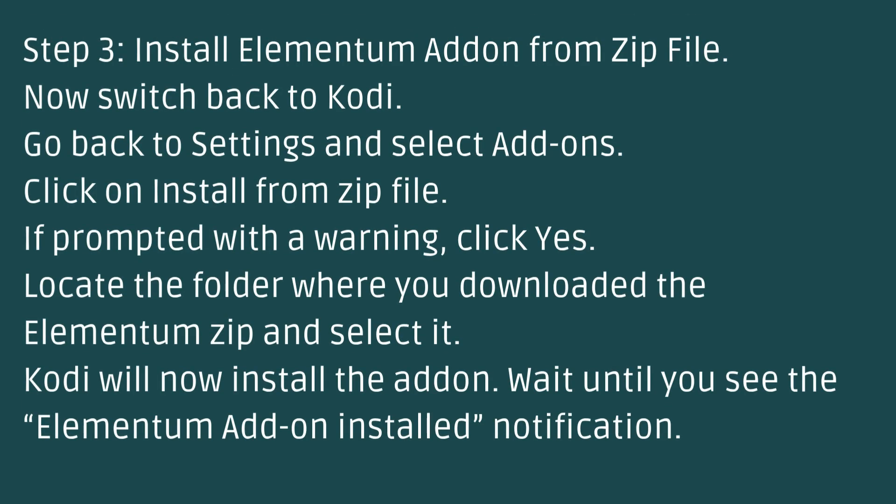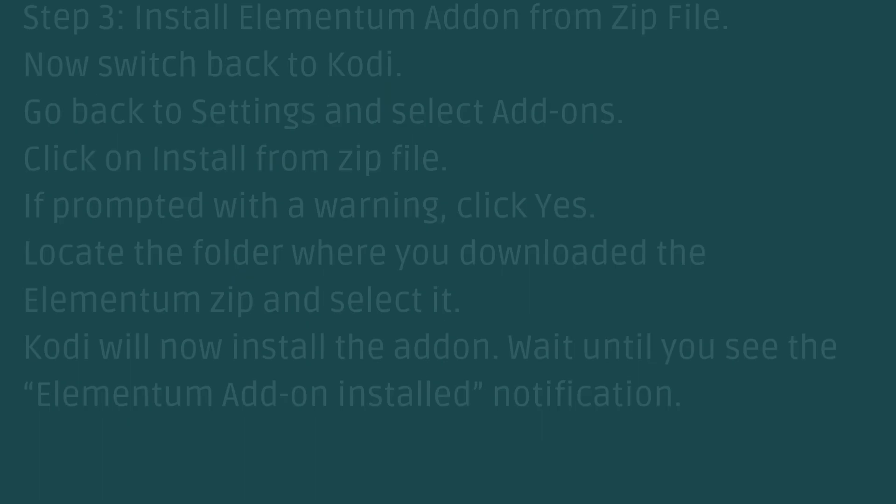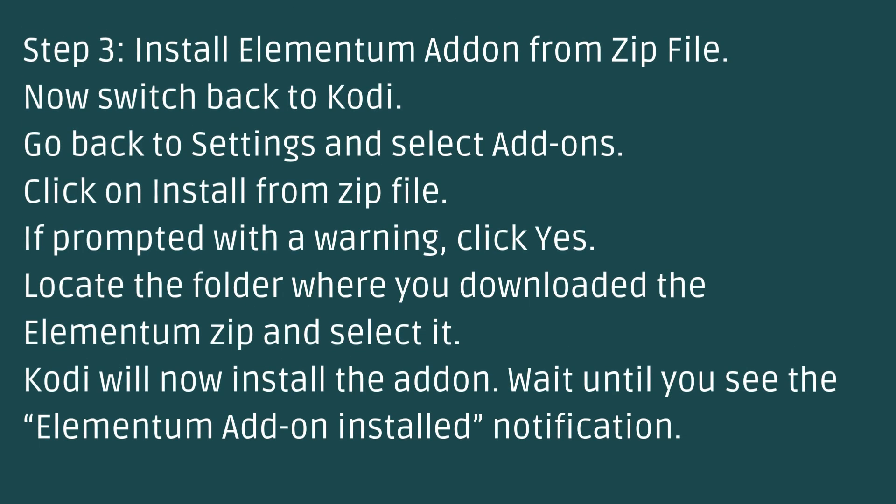Step 3: Install Elementum add-on from zip file. Now switch back to Kodi. Go back to settings and select add-ons. Click on install from zip file. If prompted with a warning, click yes. Locate the folder where you downloaded the Elementum zip and select it. Kodi will now install the add-on. Wait until you see the Elementum add-on installed notification.